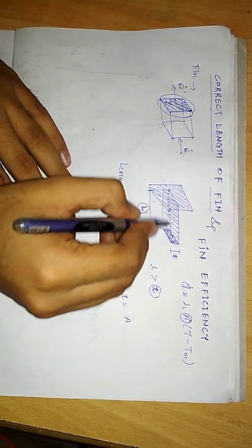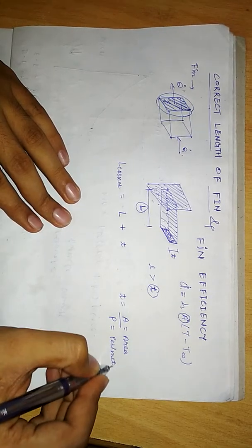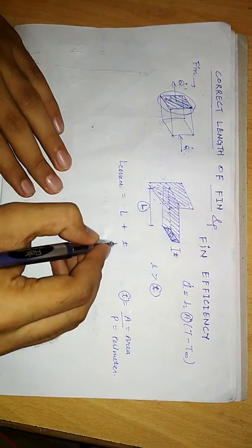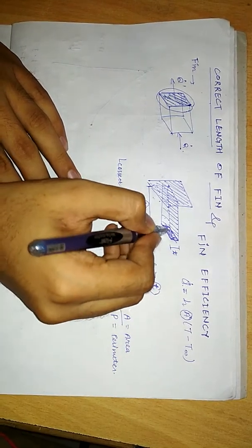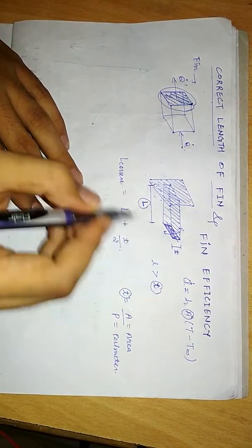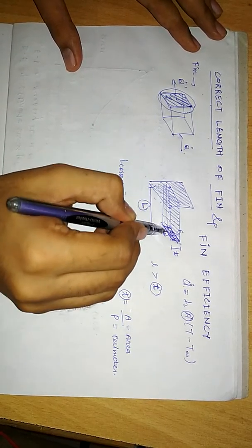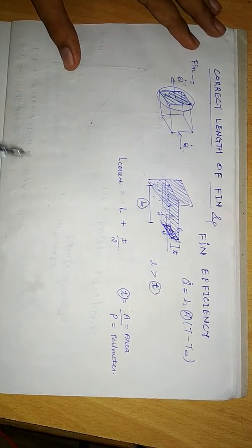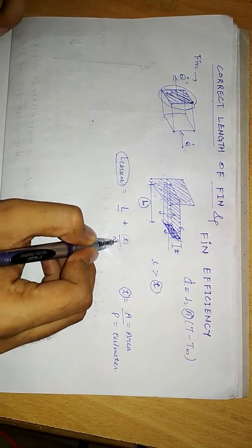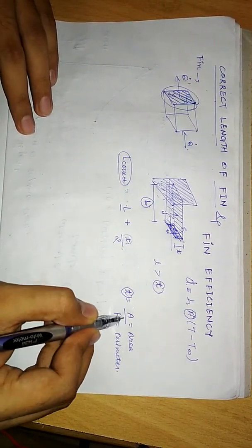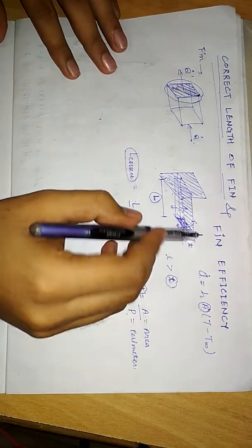The thickness T at the tip is equal to the area of the surface divided by the perimeter: T = A/P. We divide it by two because we are adding half of this thickness to the upper body of the fin and half to the lower body. So the correct length is L_c = L + (A/P)/2, where the thickness comes from area divided by perimeter of the fin. This is the correct length of the fin.